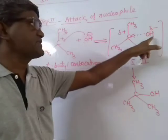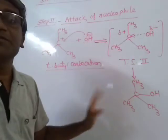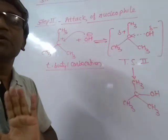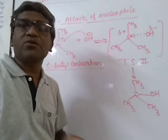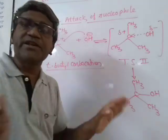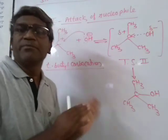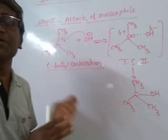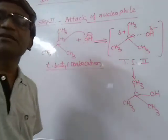The nucleophile will attack from any side in this planar arrangement where all three groups are at 120° to each other. So there will not be any kind of backside attack or inversion of configuration in this type of SN1 mechanism.